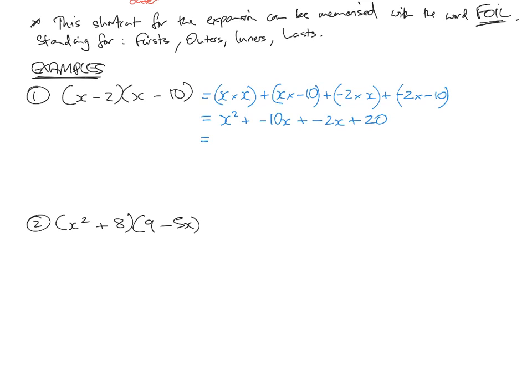Now we collect like terms. x² stays, plus and minus becomes -10x, plus and minus becomes -2x, plus 20. We didn't collect like terms last step, so we'll do it now. -10x take 2x is -12x plus 20.